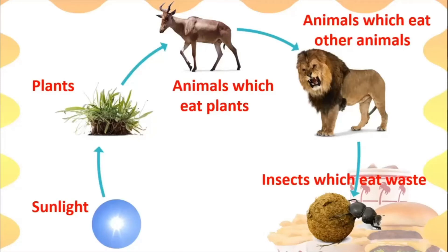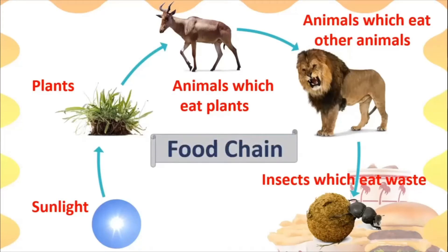If there is a problem with sunlight, plants will not grow. If plants do not grow, herbivorous animals won't be there. If herbivorous animals aren't there, carnivorous animals won't be there. And if both are gone, all the little insects will also die. This entire thing is called the food chain — just like a chain where if you remove one link, the chain breaks. That is how nature works. You should not cut down plants and should try to save the lives of all animals, because God put all of them there for a purpose — if one is missing, all others are affected.